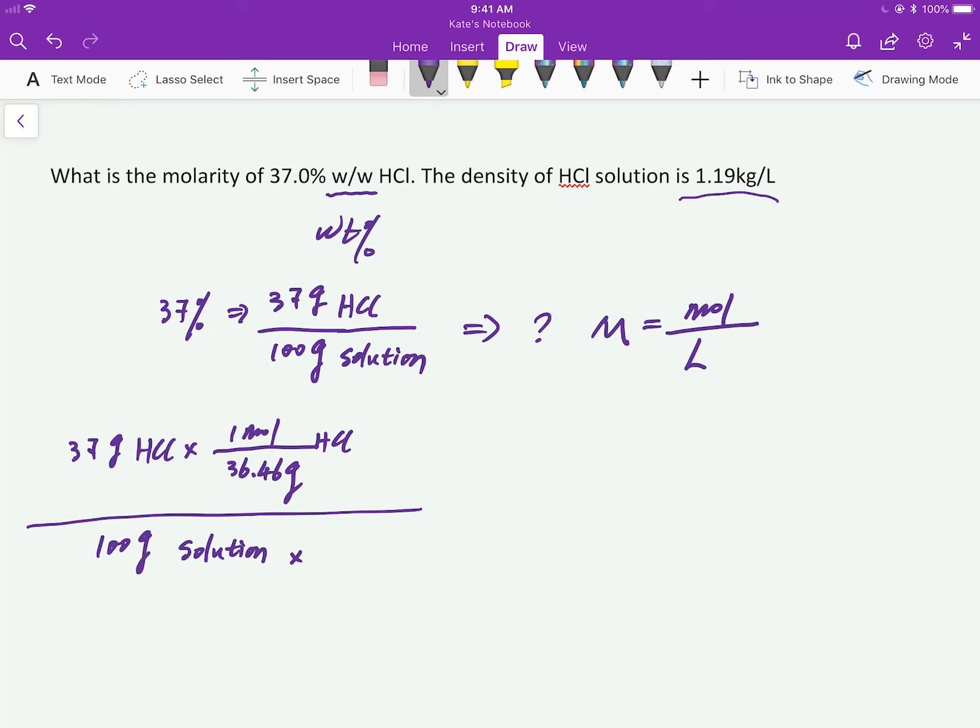And remember here, it's given as kilogram. And we know one kilogram is 1,000 gram. Then convert that to 1,000 gram. Okay. Now gram, gram cancel out per liter.